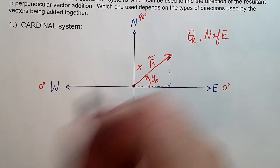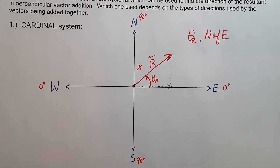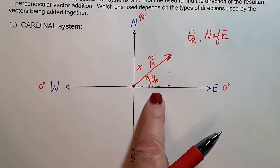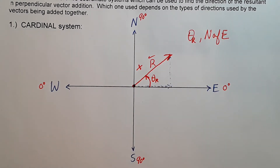Do not measure the angle east of north — that's not standard convention. Just like New York is not an 'east northern' state, we don't say that. We say New York is in the northeast. So we always start at the horizontal axis and measure northward from there if it's in the first quadrant.